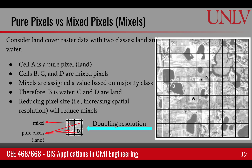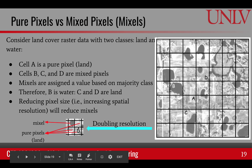Mixed pixels are usually classified based on the majority rule. For example, cell D is considered land because most of it is land, and cell B is considered water because most of it is water. When we start increasing the spatial resolution — reducing the grid cell size — the detail becomes clearer and we get more pure pixels. If we take cell D and double the resolution by reducing the grid size by half, we can see there will be three pure pixels and only one mixed pixel.